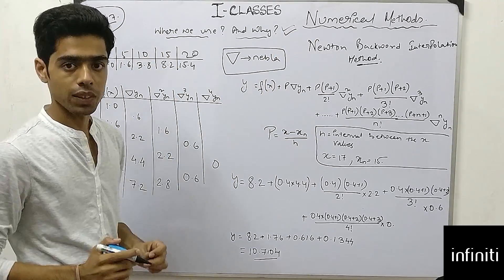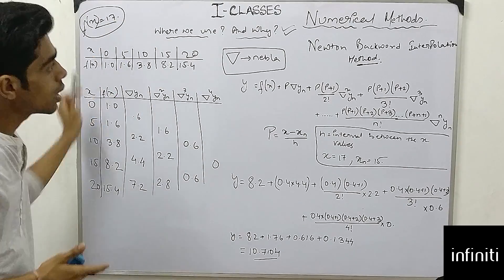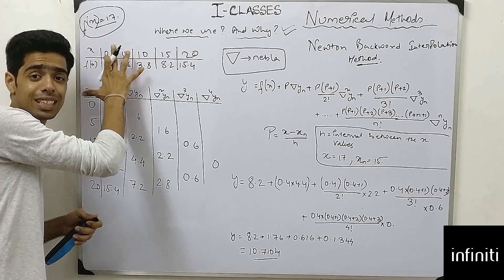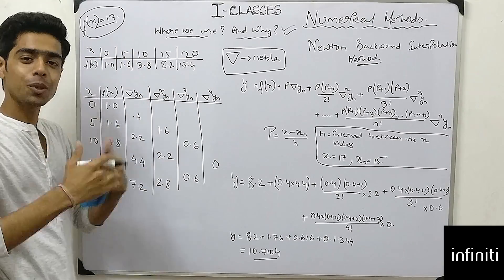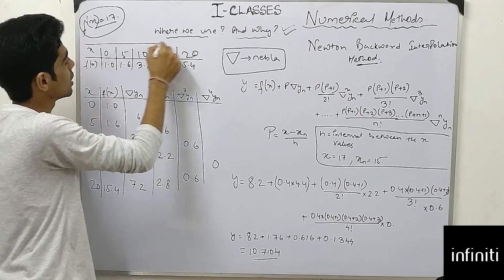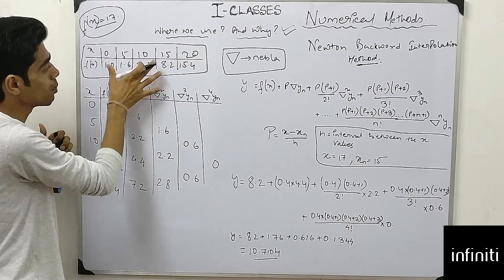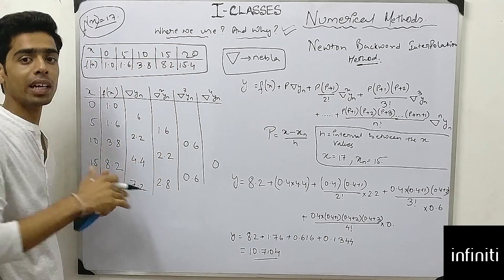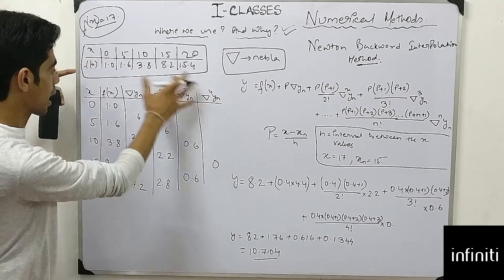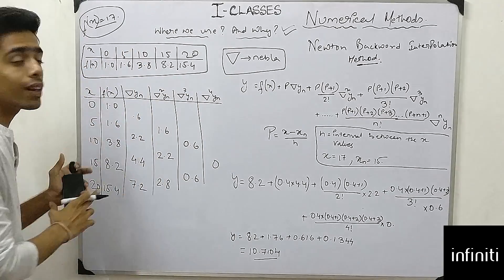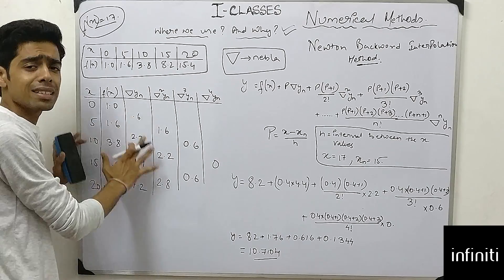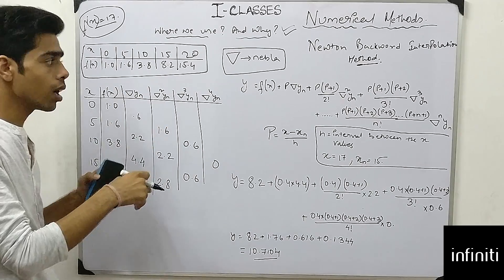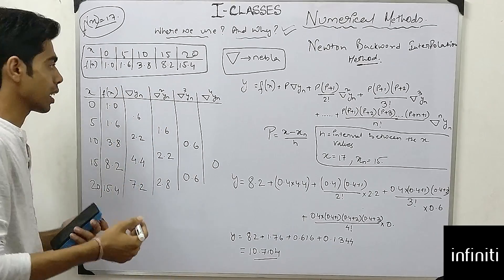Now moving to Newton's Backward Interpolation Formula. You are provided with an x table and an f(x) table, and you have to compute everything using these two tables. In Step 1, from the given table you have to construct the difference table. This process is essentially the same as in Newton's Forward Interpolation Method.